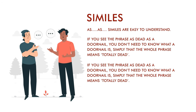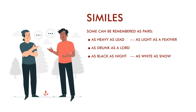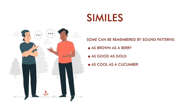Some expressions have something to do with their parts. For example, 'as dead as a doornail' means totally dead. 'As blind as a bat' — bats are supposed to be blind. 'As strong as an ox,' 'as quiet as a mouse,' 'as heavy as lead,' 'as black as night,' 'as white as snow,' 'as brown as a berry,' 'as good as gold' — probably gold is expensive and therefore good — and 'as cool as a cucumber.'